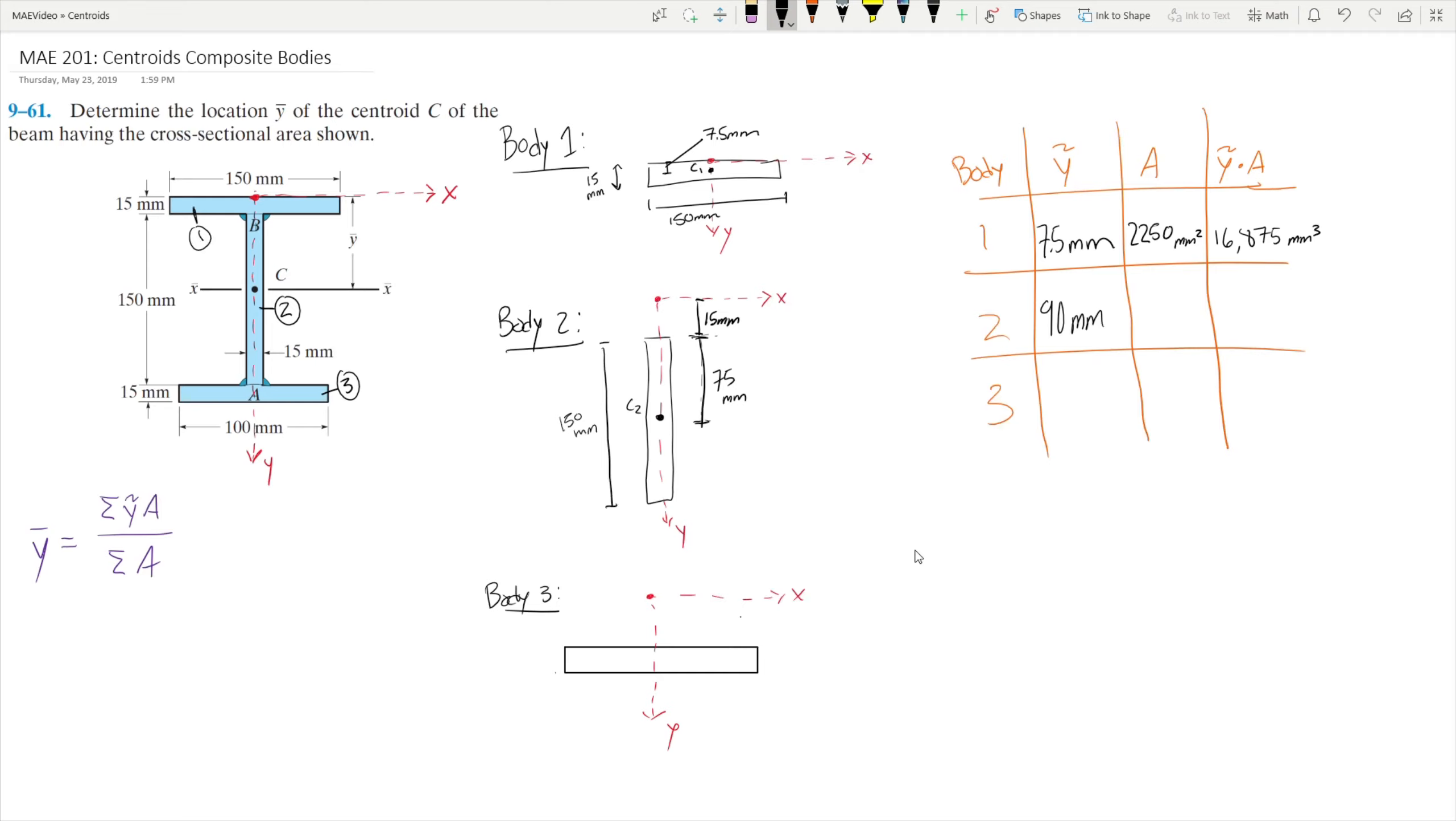Let's write that off to the side here. The area of body 2 is going to be 15mm times 150mm, which equals 2250mm squared as well. If we multiply our y-tilde out by our area, we get a value of 202,500mm cubed.